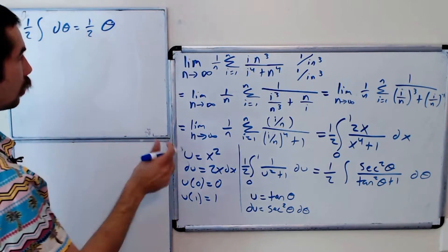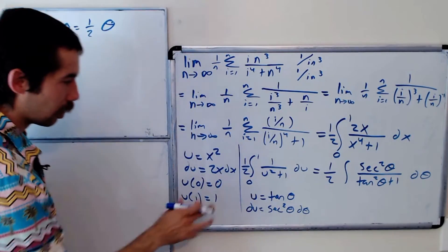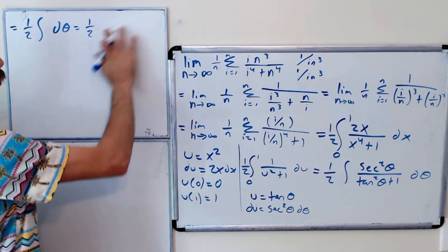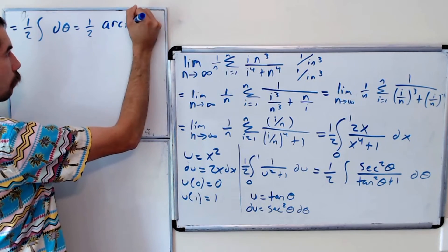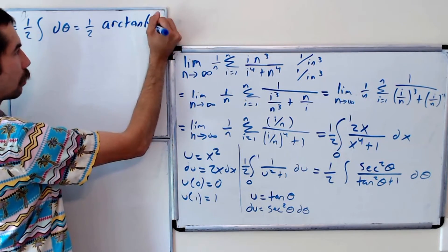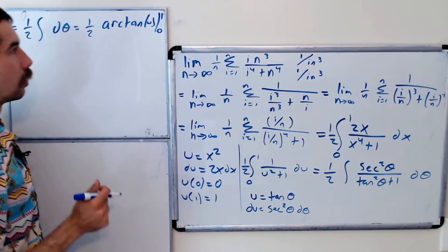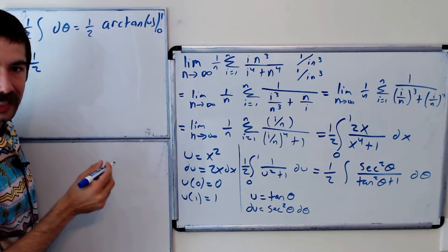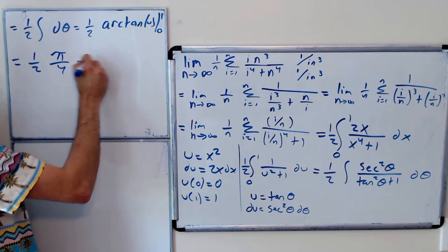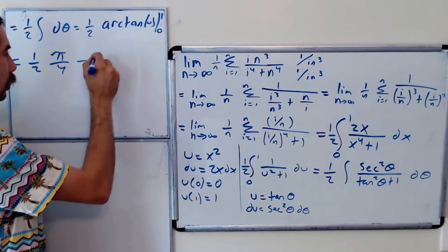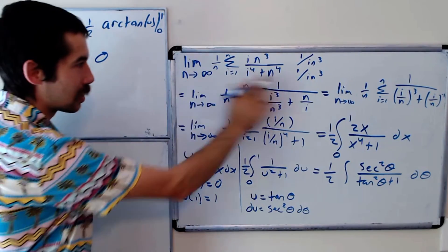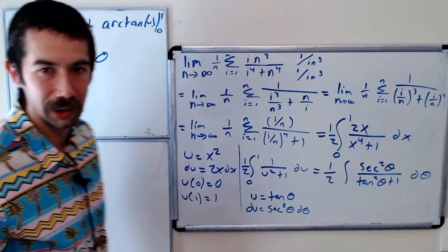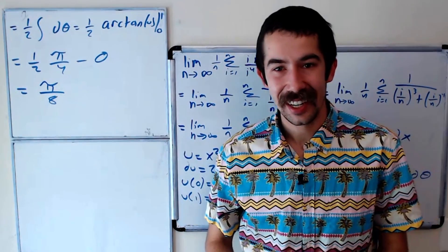This is just one-half θ. Since we're evaluating a definite integral, θ is arc tangent of u, evaluated at 0 and 1. So this equals one-half times arc tangent of 1 minus arc tangent of 0. Arc tangent of 1 is π/4, and arc tangent of 0 is 0. So our final answer — this limit of the sum — is equal to π/8.